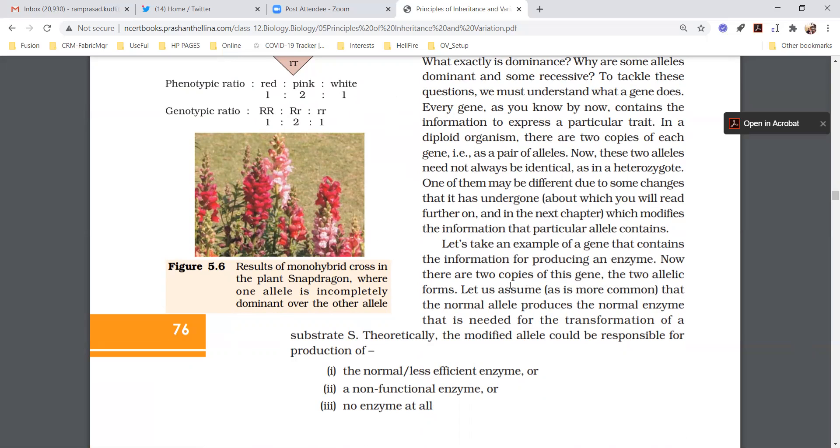Let's take an example of a gene which contains some information to produce a new enzyme. There are two copies of the gene, two allelic forms. Let us assume normal allele produces normal enzyme. Enzyme is required, it is much needed for the transformation of substrate.